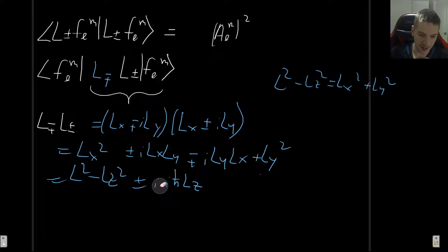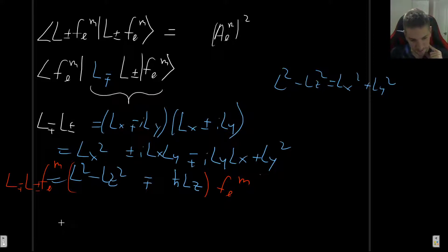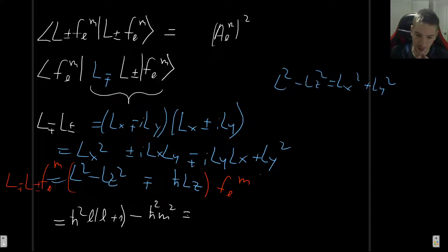So this is L∓L±. Now let's let it act on |f, l, m⟩. We already know how these operators act on a state from the previous video. When L² acts on it, we get ℏ²l(l+1). When Lz² acts, we get ℏm for each Lz, so it's ℏ²m². Then we have ∓ℏ times ℏm, giving ℏ²m. So we get ℏ²[l(l+1) - m²] ∓ ℏ²m, all still acting on |f, l, m⟩.